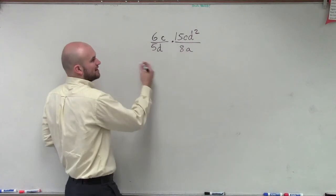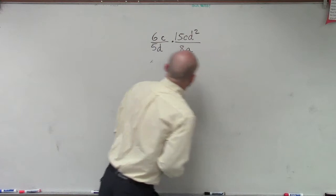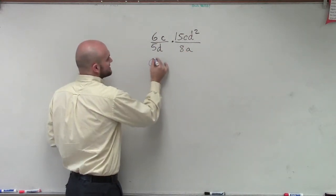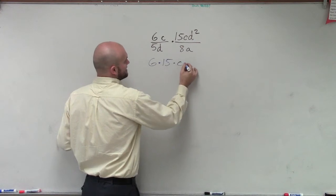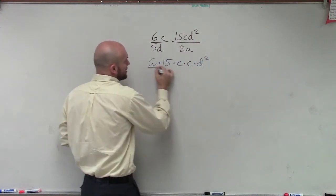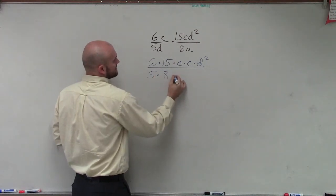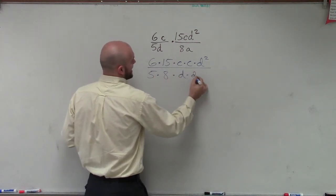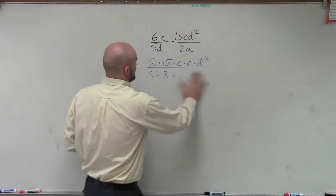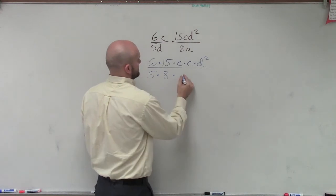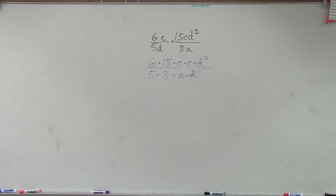So what I'm going to do is I'm going to multiply the numbers first. So let's do 6 times 15 times c times c times d squared, all over 5 times 8 times d times a. Does everybody see what I did? I just rewrote it, but let's rewrite the a in front of the d. I'm just rewriting them so they're a little bit more in order.